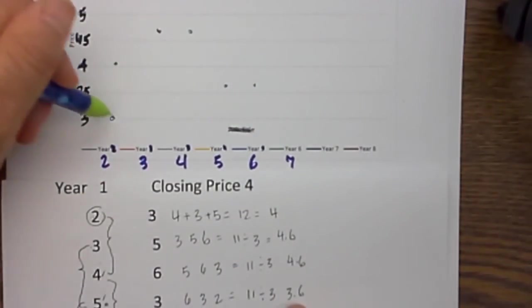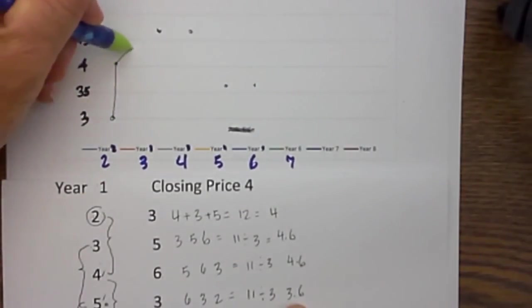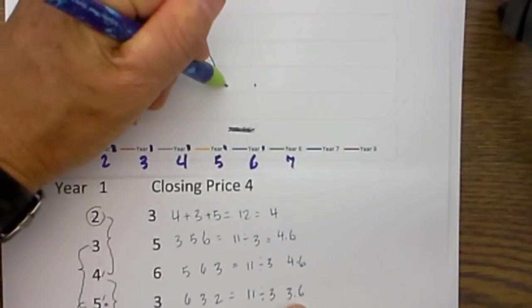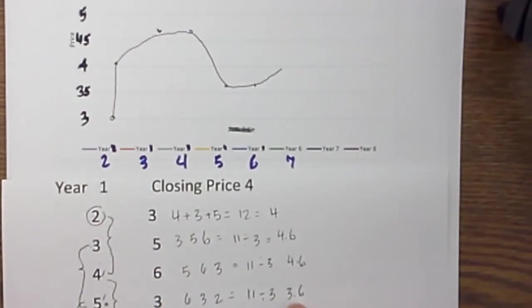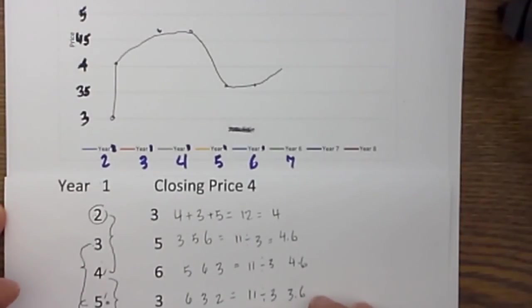and then for year 6 we have 3.6. And then what you can do is you would just connect the dots and it gives you a nice pretty line. People who invest look at these and they have all kinds of indicators that help them invest.